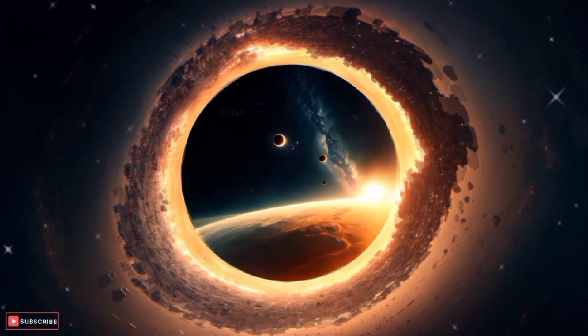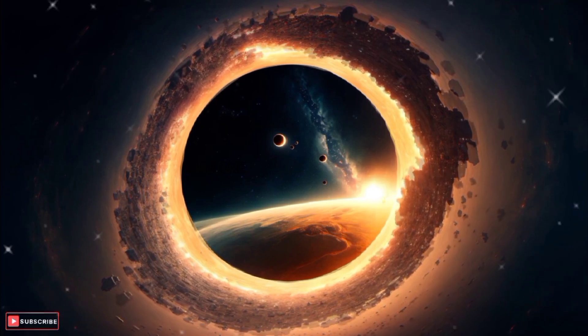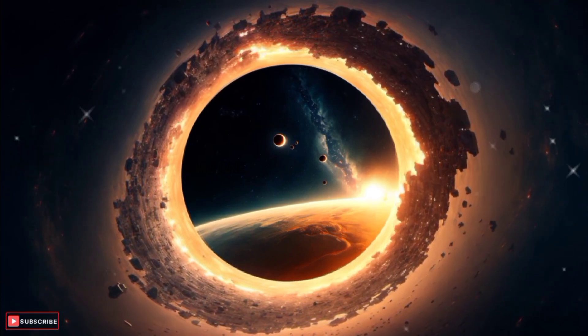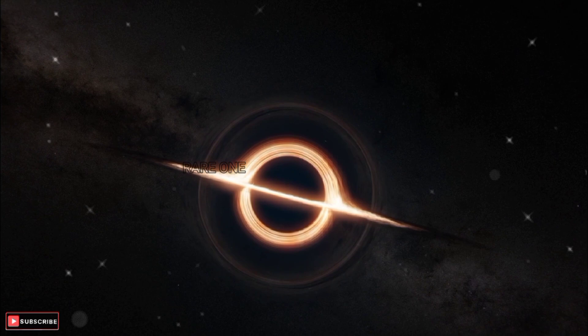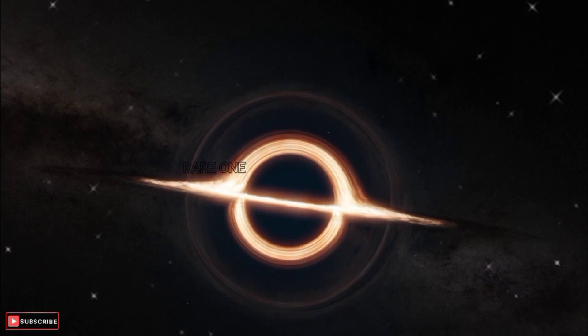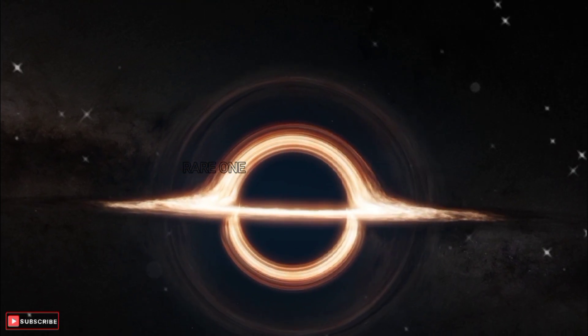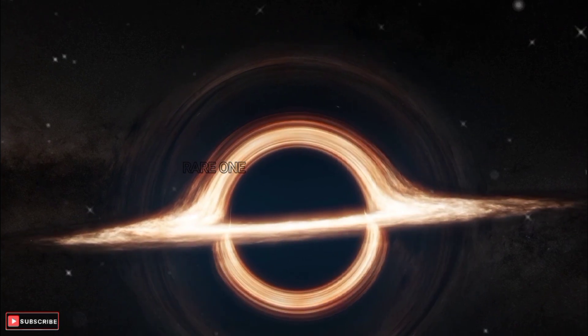For instance, the event horizon of a black hole equivalent to the sun's mass would extend just about two miles. Even a black hole the mass of Earth would have an event horizon merely inches in size, comparable to the tip of your thumb.